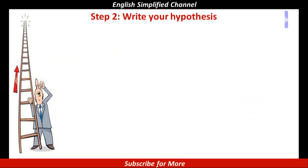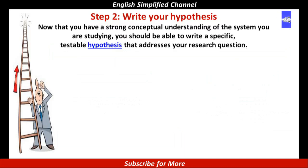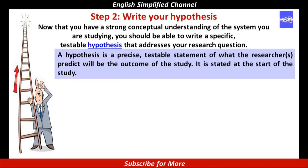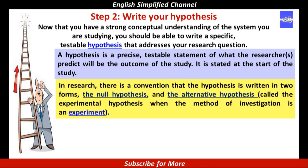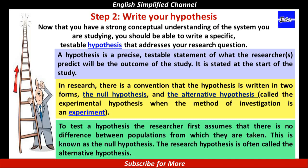Now let's understand Step 2: write your hypothesis. Now that you have a strong conceptual understanding of the system you are studying, you should be able to write a specific testable hypothesis that addresses your research question. A hypothesis is a precise, testable statement of what the researchers predict will be the outcome of the study — it is stated at the start of the study. In research, there is a convention that the hypothesis is written in two forms: the null hypothesis and the alternative hypothesis, called the experimental hypothesis when the method of investigation is an experiment. To test a hypothesis, the researcher first assumes that there is no difference between populations from which they are taken — this is known as the null hypothesis. The research hypothesis is often called the alternative hypothesis.